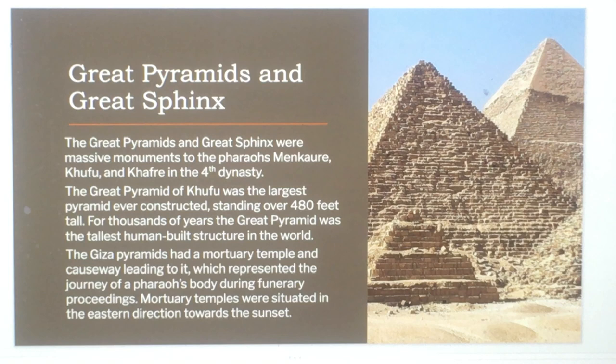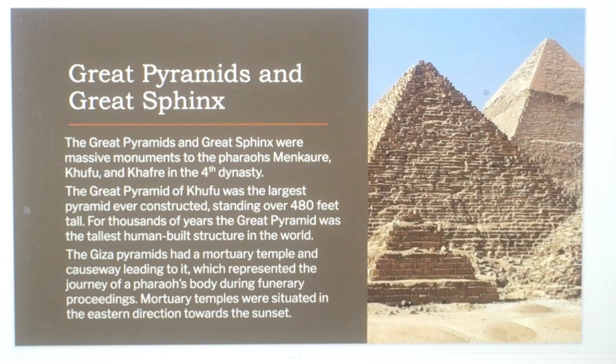The Giza pyramids had a mortuary temple and a causeway leading to it, which represented the journey of the pharaoh's body during funerary proceedings. Mortuary temples were situated in the eastern direction toward the sunset.